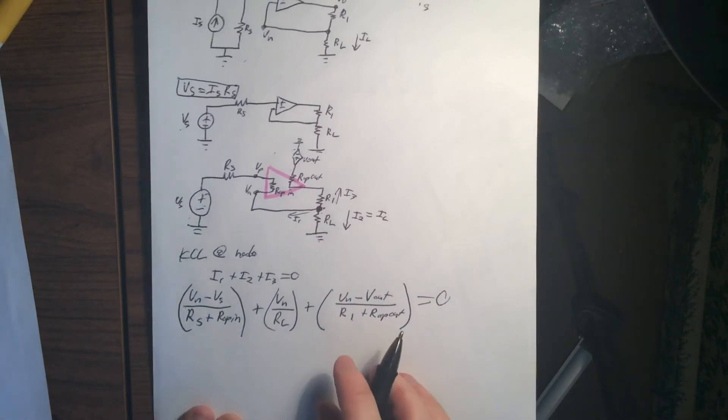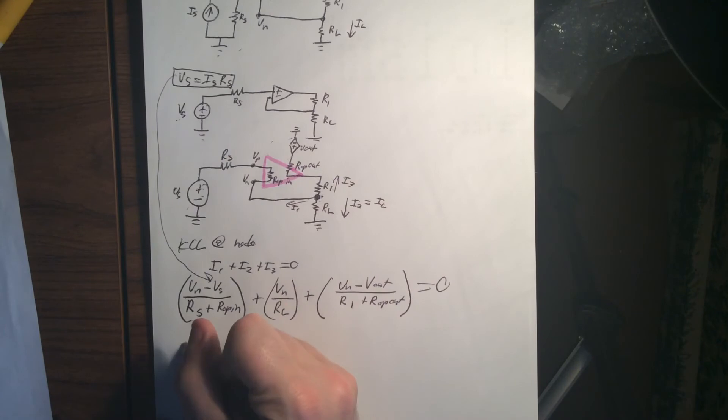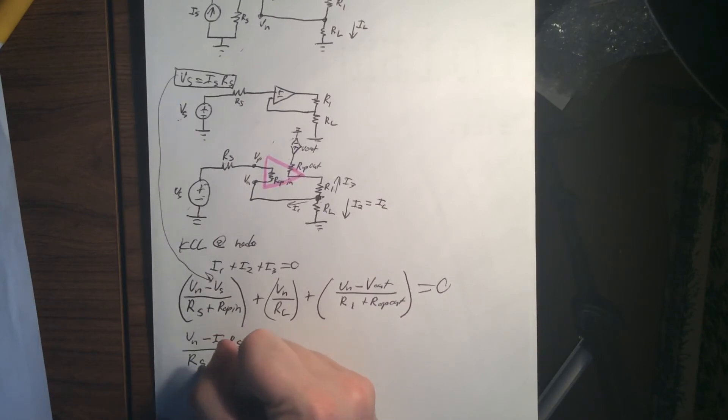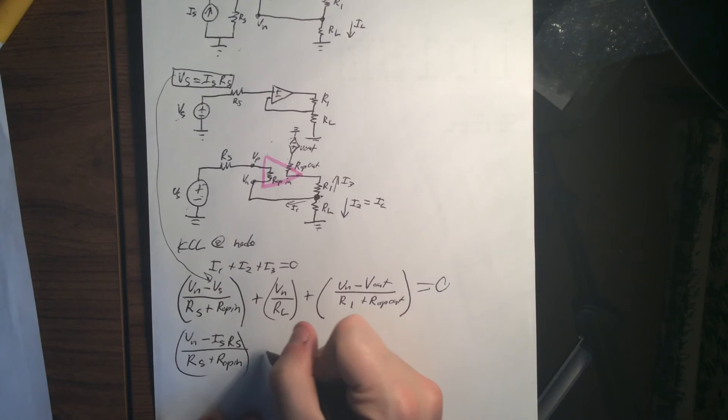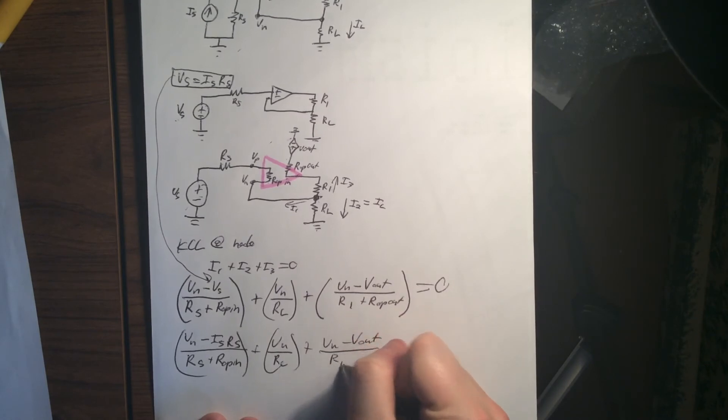And then there's one last thing that we can do to solve this. We can take this equation and plug it into here. So this is going to be VN minus IS*RS divided by RS plus ropIN plus VN over RL plus VN minus Vout over R1 plus ropOUT equals zero.